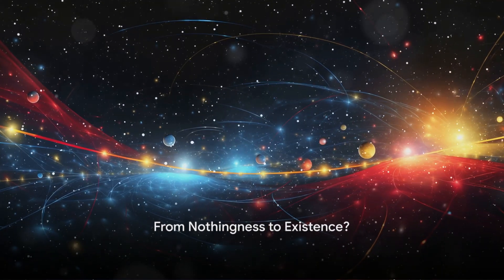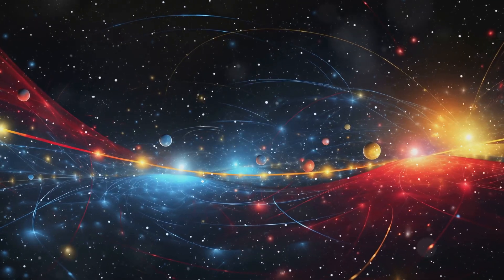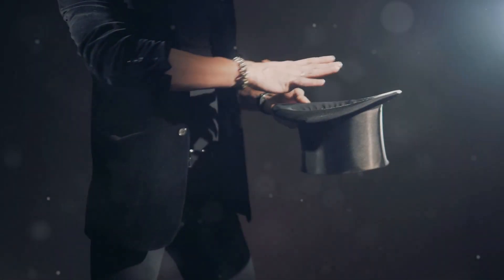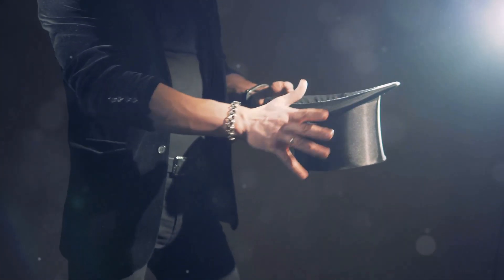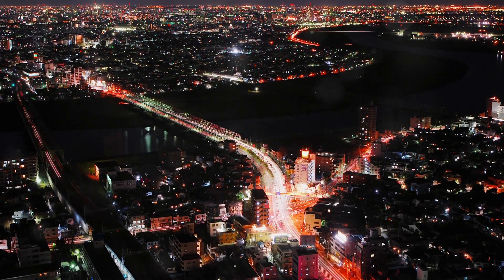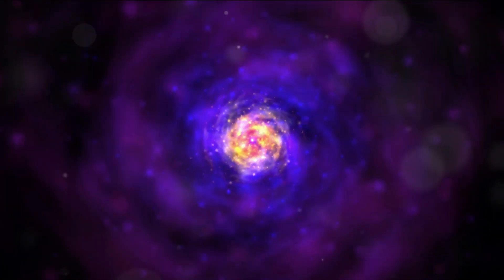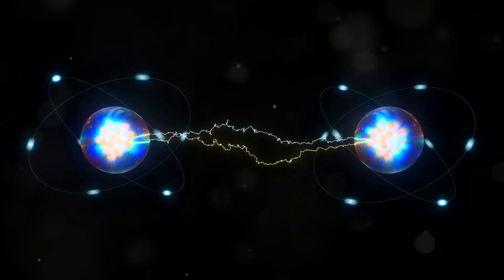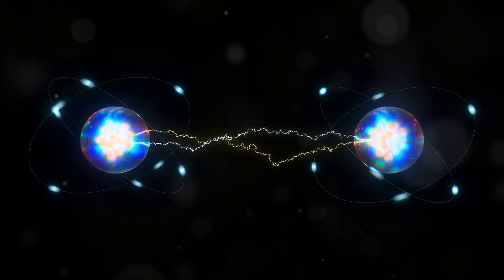Get ready to delve into the realm where the very fabric of space-time gets a little fuzzy, the quantum realm. Quantum creation theories propose that the universe, in all its vastness and complexity, could have emerged from a quantum fluctuation, a tiny random blip in the vacuum of space. It's like pulling a universe out of a cosmic hat, except there's no hat, and the magician is quantum mechanics. Now, the quantum world operates by rules that seem utterly bizarre compared to our everyday experience. Here, particles can pop in and out of existence, borrow energy from the void, and exist in multiple states simultaneously. It's a place where the impossible seems not just possible, but downright likely.